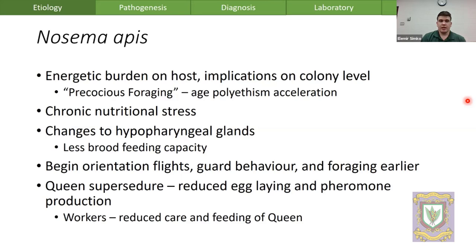Nosema imposes a chronic nutritional stress causing changes to the hypopharyngeal glands, which reduces brood-feeding capacity. Bees begin orientation flights sooner, and guard behavior and foraging occur earlier. The queen can be affected either by direct infection — imposing nutritional stress leading to reduced egg-laying and pheromone production — or by secondary effects from a reduced worker retinue impairing their ability to care for her.